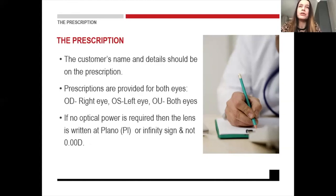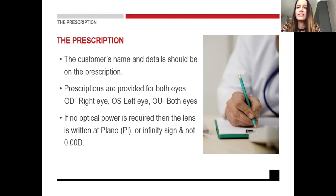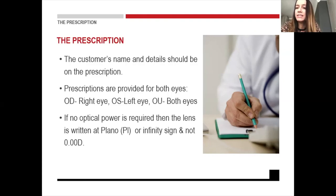On the prescription you'll usually find the patient's name and maybe age and other details. The prescription also provides OD for right eye, OS for left eye, and OU for both eyes. In practice, you'll more often see these when you receive a referral letter or prescription from an ophthalmologist. If there's no power required on the lens, it's usually written as PL for plano, or as 0.00.